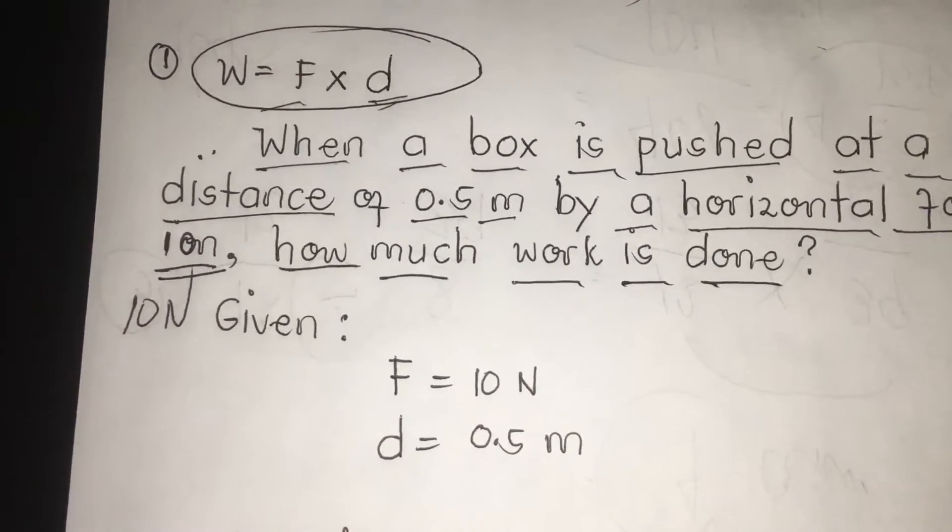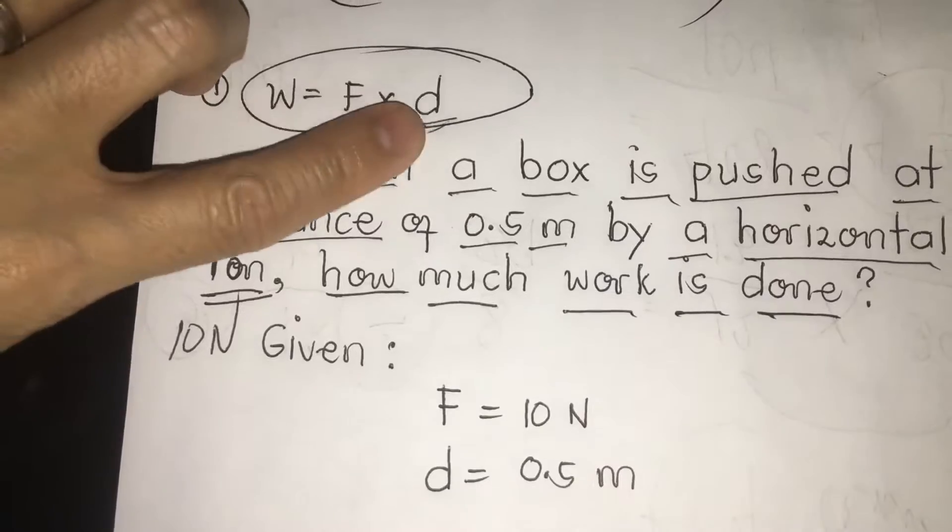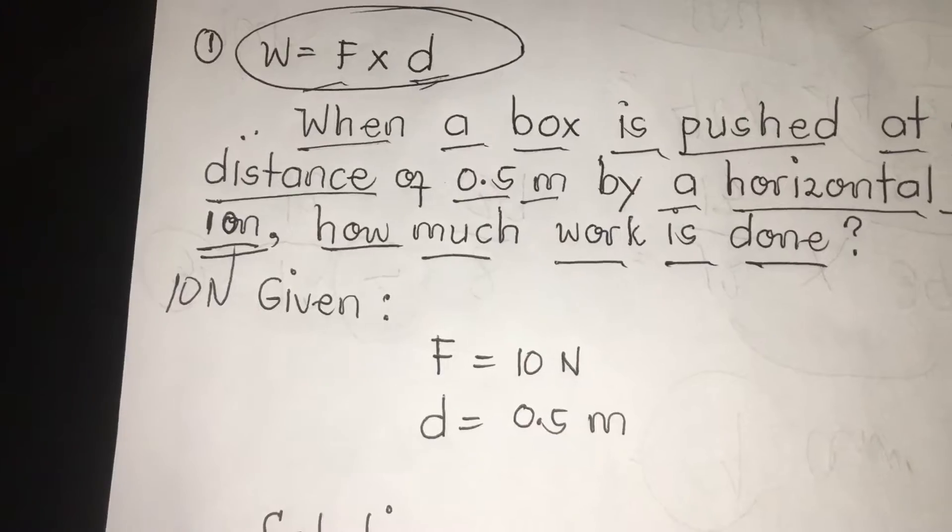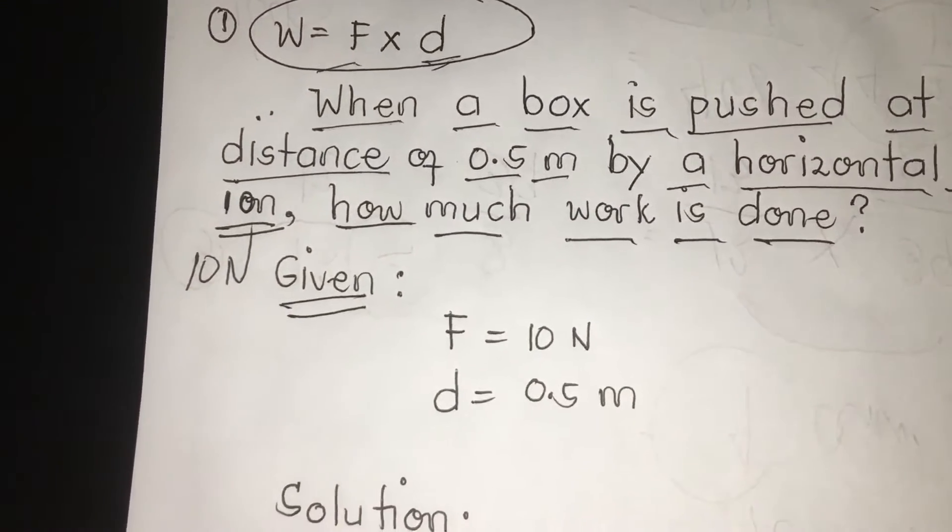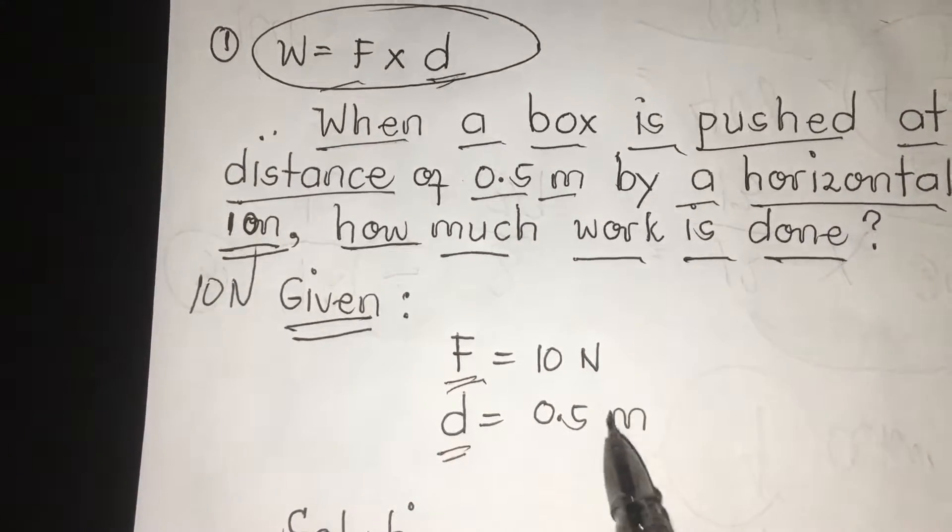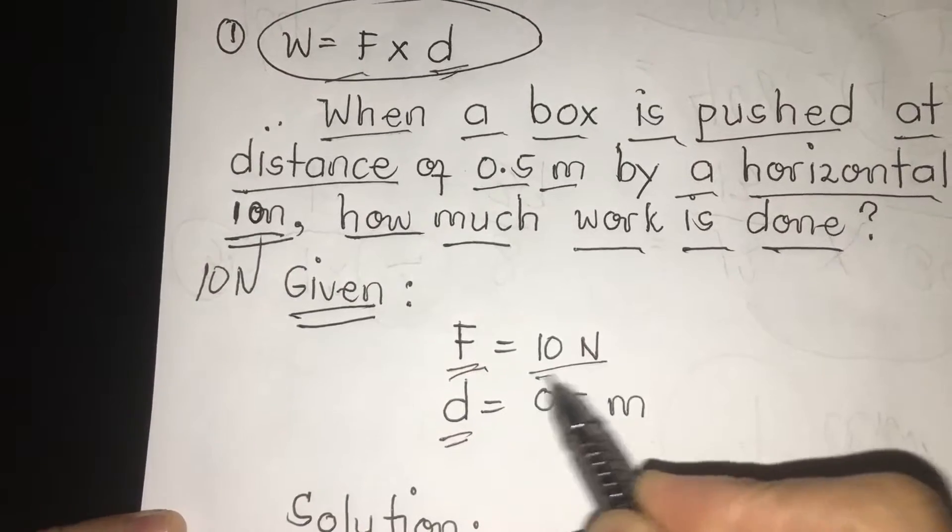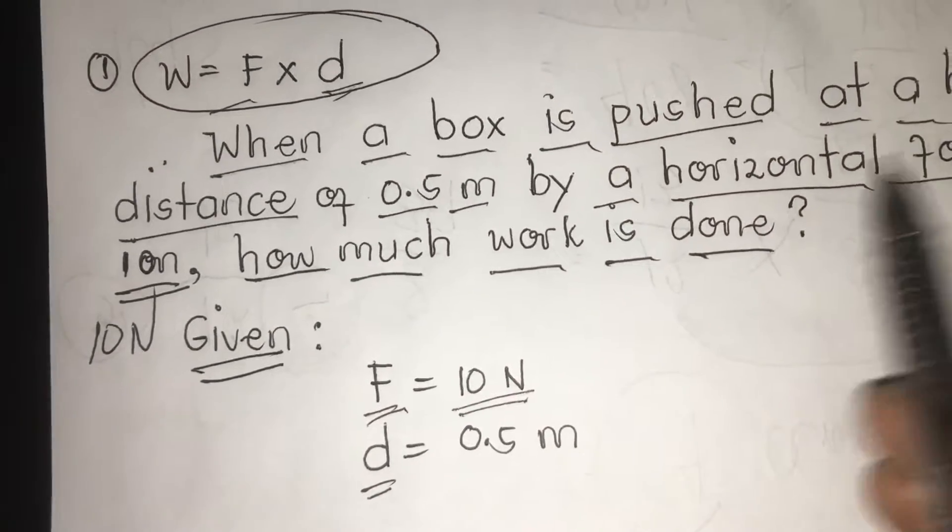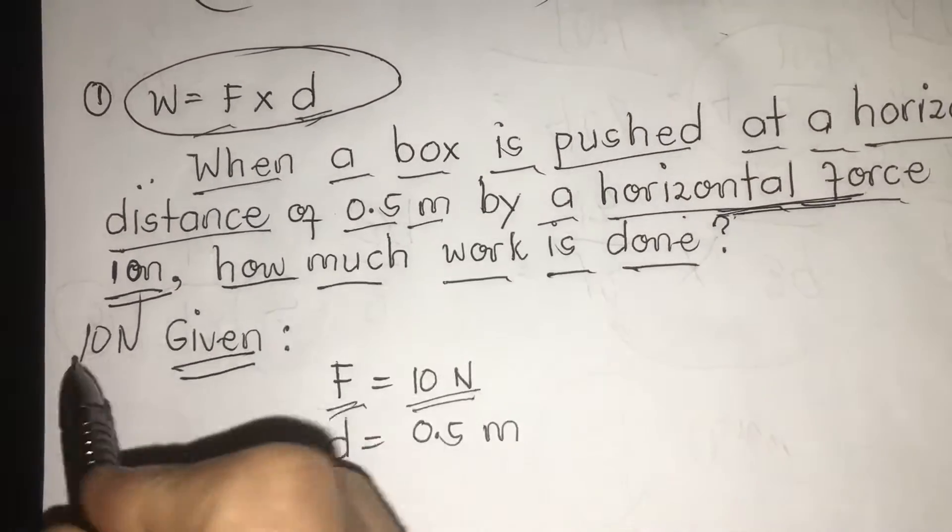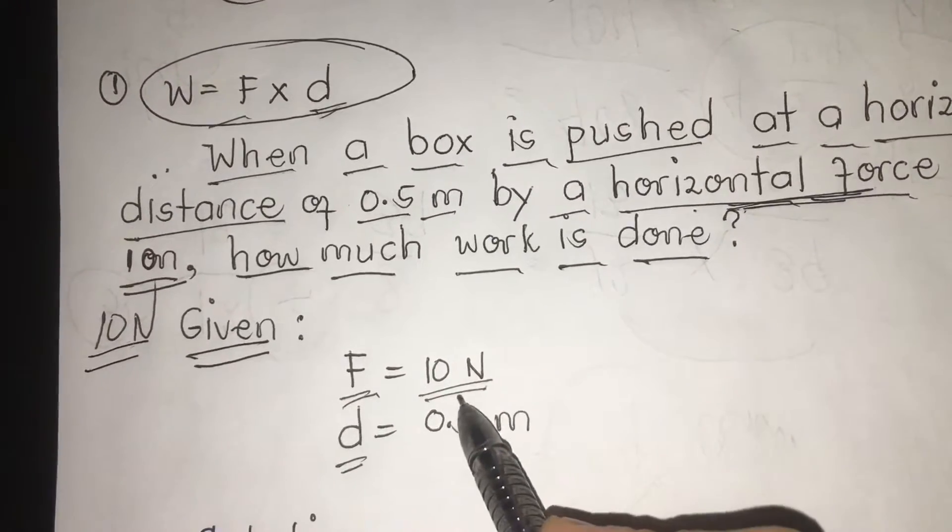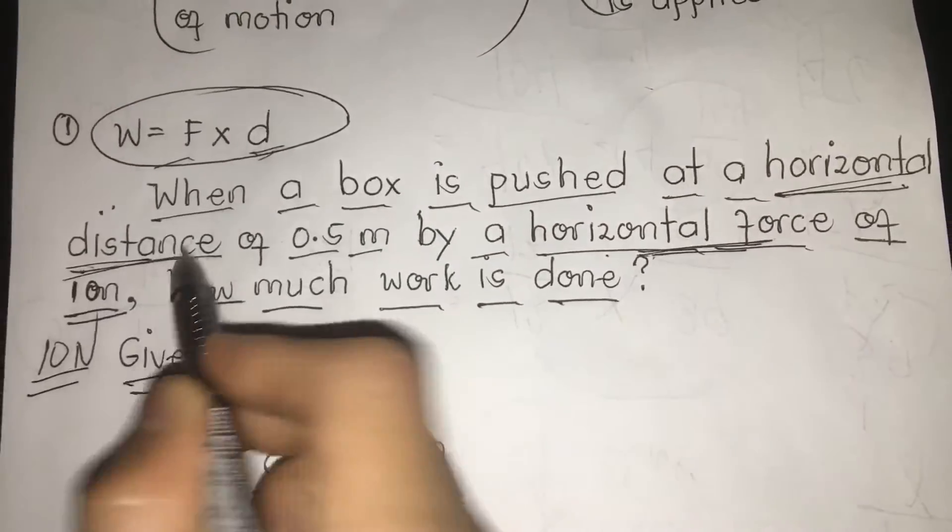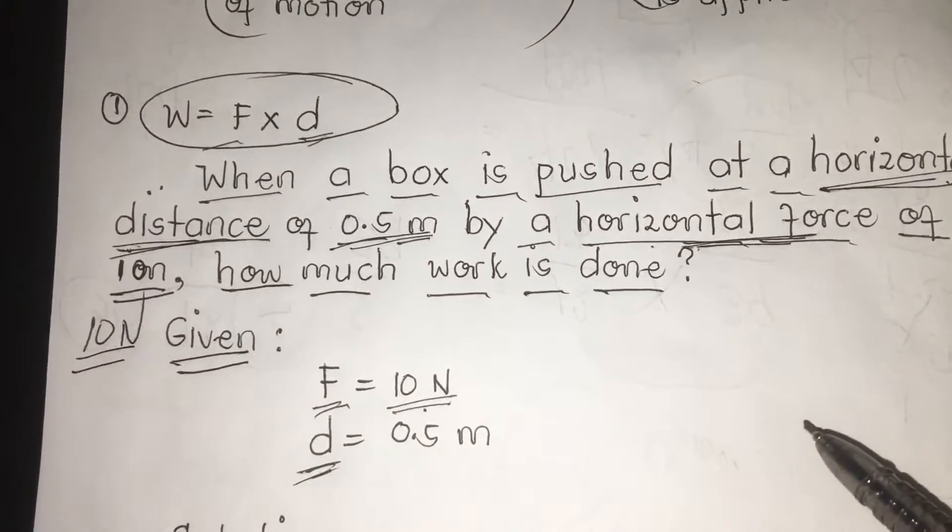So, since our formula is W = F × D or work equals force times distance, we're going to find out the given. Given first, we're going to find first the force and then the distance. We have first here 10 N. Where did I get 10 N? We have what we call a horizontal force of 10 N. That's why I write here 10 N. Then distance, we have horizontal distance of 0.5 meter.